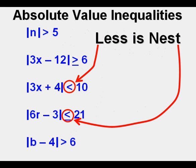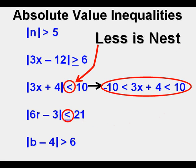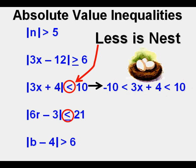Less is NEST will apply to two lesses. Here is what it changes to: we make the positive number on the right negative — negative 10 — place the expression 3x plus 4 in the middle, and make that less than the positive number, which in this case is 10. We call it NEST because the expression nests in the middle and doesn't have arrows pointing outward. On a number line, it is a filled-in line segment between two boundary points.